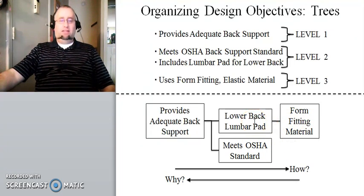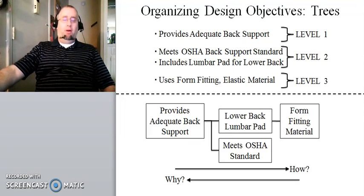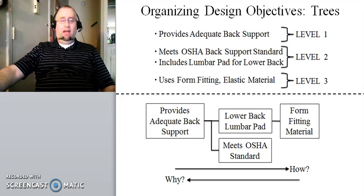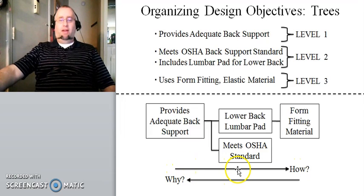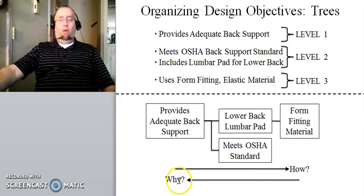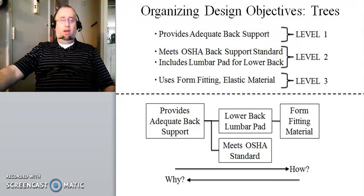You can see how these different design objectives relate to each other through the tree approach. Remember, we talked about asking the client what, why, and how questions. Here we can see how those questions map onto the tree approach. As you move from right to left, you move more in the direction of how you're going to achieve the particular design objectives. Moving from right to left addresses the why — the bigger picture of what the design objectives are and why they're important. These what, why, and how questions ultimately inform your organization of the design objectives into a form that's easy for the engineer to understand, but also clear, succinct, and understandable to the client.